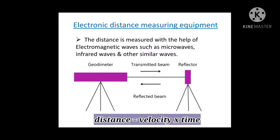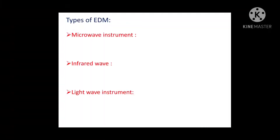Now, the types of electronic distance measuring equipment: those are microwave, infrared wave, and light waves.